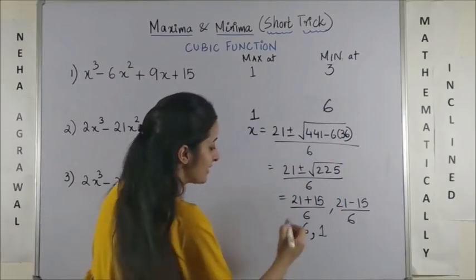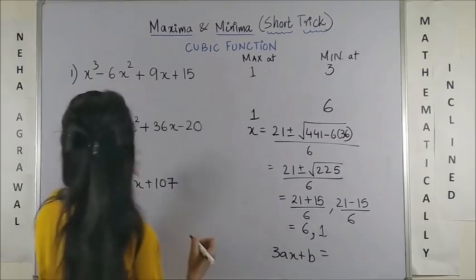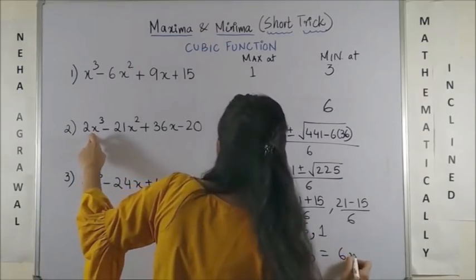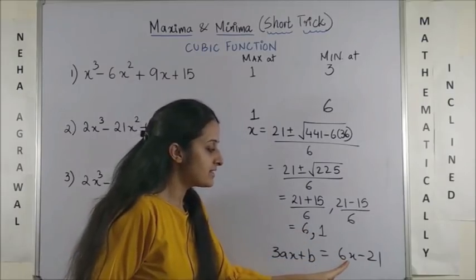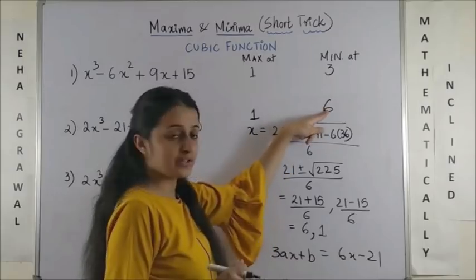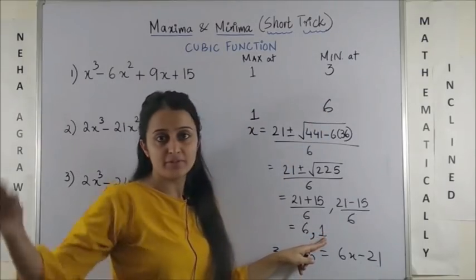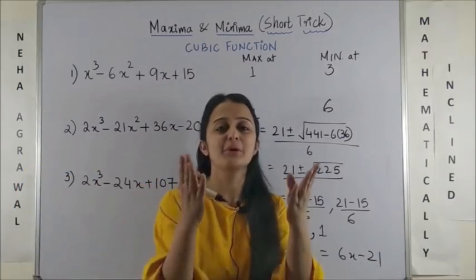Still, if you want to check plug in the values in 3ax plus b which from here is 6x minus 21. So, 6 into 6 is 36 minus 21 positive answer gives you the negative value and with 1, 6 minus 21 which is minus 15 negative would give you a maximum value.